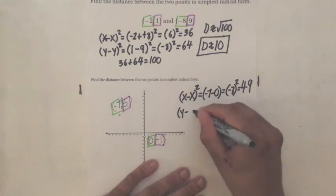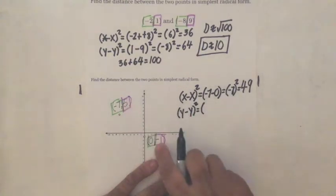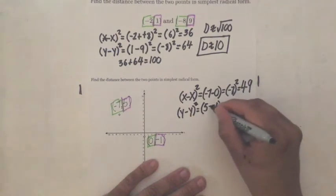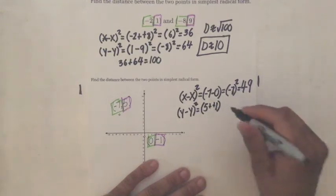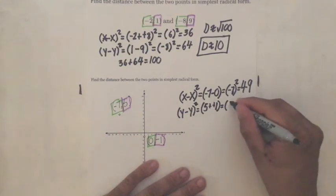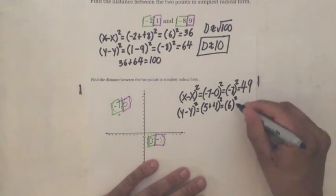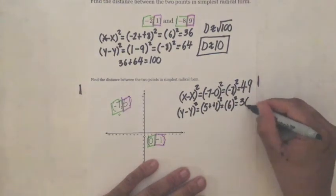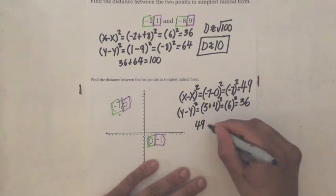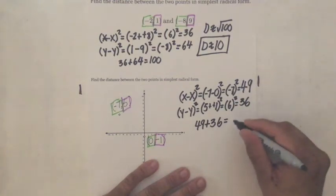Now I'm going to find my Y. Y minus Y squared. My two Y's are five and negative one. Five minus negative one. Negative crossing to each other becomes plus. Five plus one is six. Can't forget the squared. Six times six is 36. Then I take those two and I add them to each other. 49 plus 36 is equal to 85.